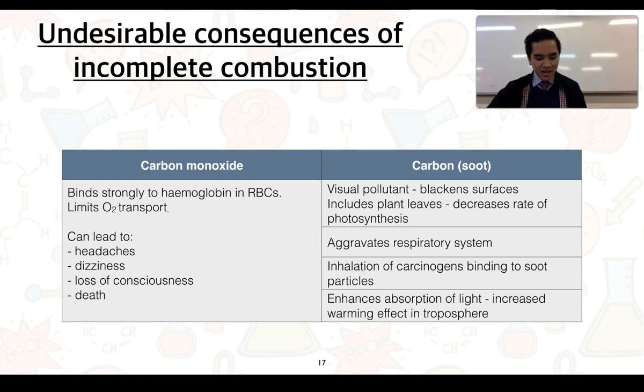Carbon in the form of soot we know is a visual pollutant. It can decrease the rate of photosynthesis. If we inhale this it could actually aggravate our respiratory system. This is more prominent for people suffering from asthma and bronchitis. The inhalation of soot can actually result in the inhalation of carcinogens which bind to those soot particles. We know that black coloured objects are extremely good at absorbing light radiation. The presence of carbon or soot in the atmosphere can enhance the absorption of light, and that can result in increased warming effect in the troposphere.